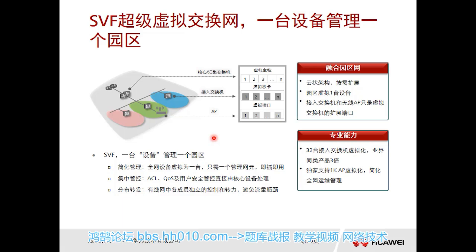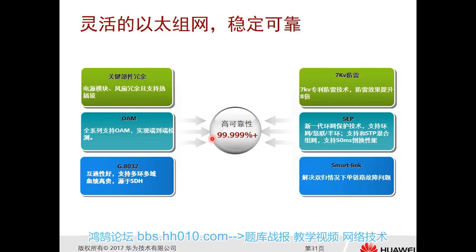The access switch only serves as the access point for the port and does not perform control functions. Its control plane is managed uniformly by the core or aggregation switches above. This simplifies operation and maintenance.